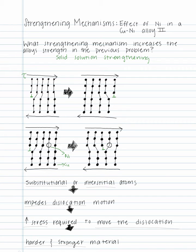Solid solution strengthening causes substitutional or interstitial atoms in a lattice that impede the movement of dislocations, therefore requiring an increased amount of stress to move the dislocation, which in turn makes the material harder and stronger.